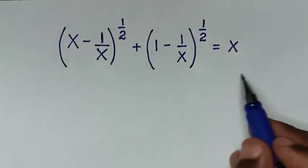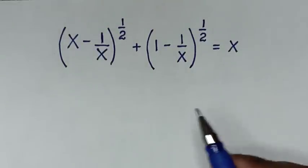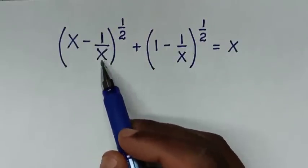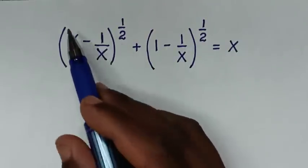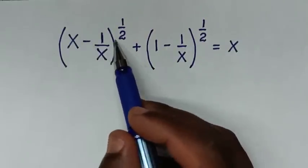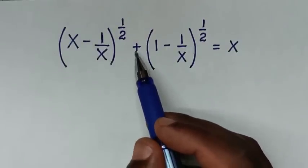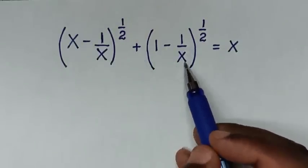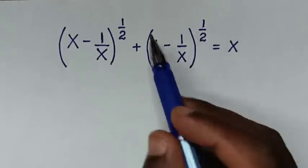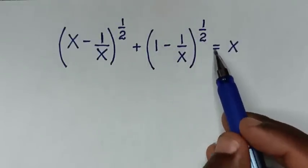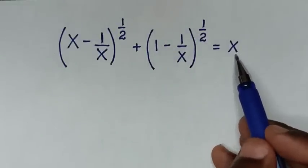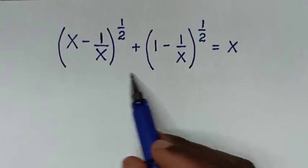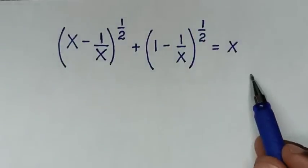Welcome. We are going to solve this math problem: (x minus 1 over x) to the power of a half, plus (1 minus 1 over x) to the power of a half, is equal to x. We need to find the value of x from this equation.